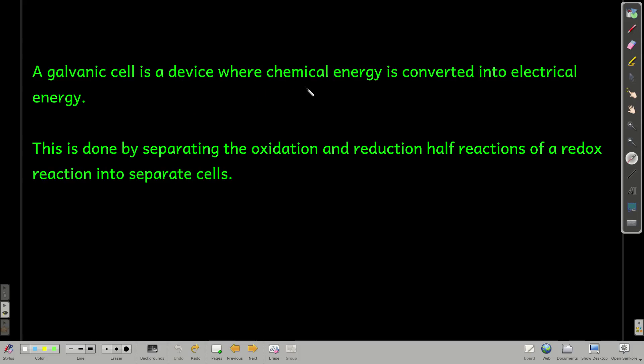It's a device where you can take chemical energy and convert it into electrical energy. And the way you do this is by taking a redox reaction and separating out the reduction half reaction from the oxidation half reaction and allow electrons to flow between the two, but you have to connect them with a wire, or some way to separate them.